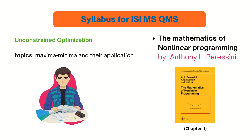There is also a topic called unconstrained optimization in the calculus part. The questions can vary and are not available in the RD Sharma book. I found another book that helped me solve the exam questions — Mathematics of Non-Linear Programming. I will provide a PDF link in the description box. You only need to read Chapter One, and that will cover your preparation for this topic.